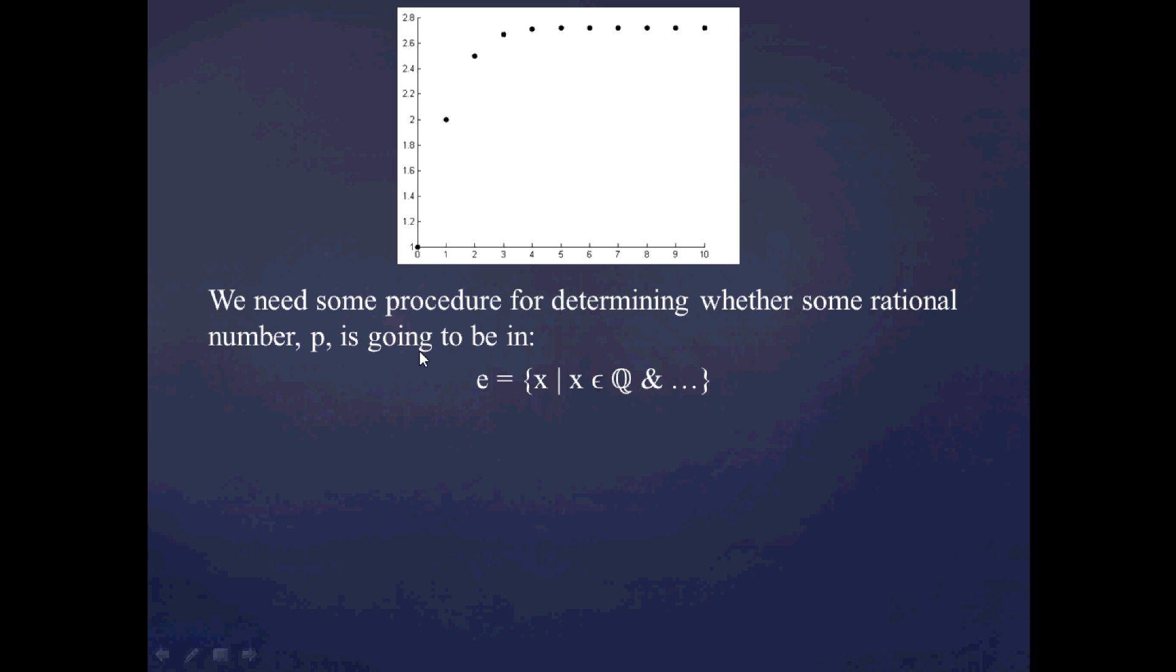So, what we need now is some procedure or some predicate here for determining whether any arbitrary rational number, let's call it p, is going to be in this set. So, I need to give you the formula for determining whether some rational number is going to be in this set. For example, if I were to program a computer, I need to give it the instructions for knowing whether to place it in this set or to exclude it from this set.